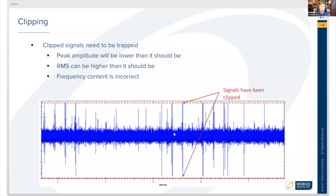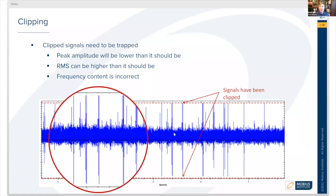Clipped signals, as you can see where these red arrows are pointing, tend to be at the same height and look clipped. The peak amplitude will be lower than it should be, the RMS can be higher than it should be, and the frequency content tends to be incorrect. You don't get a true representation of what the sound is.